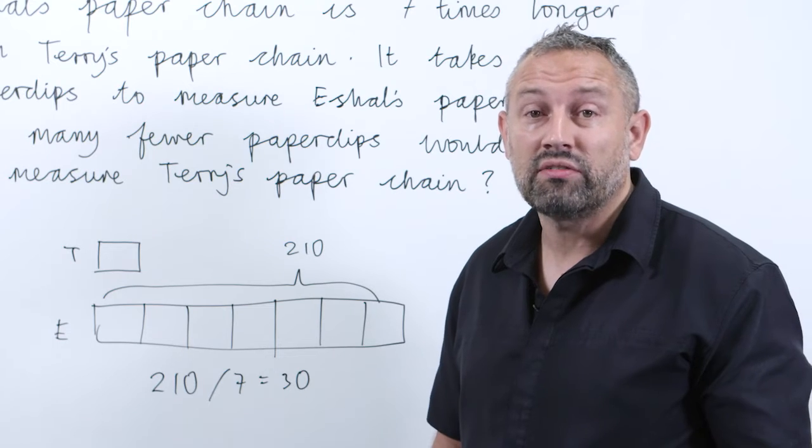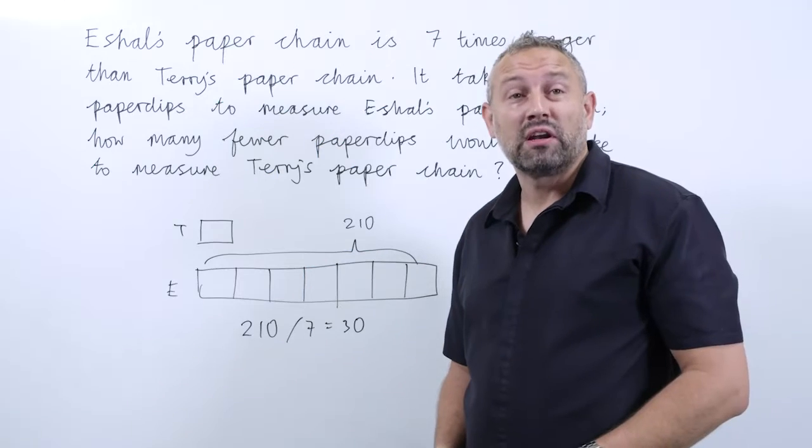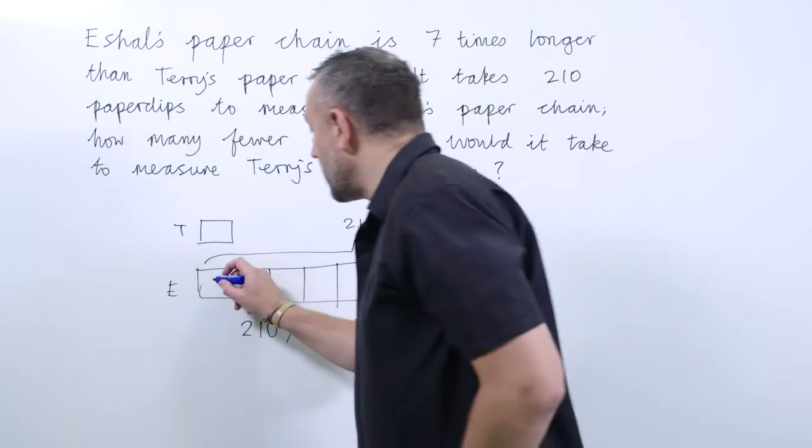They could look at it as 21 divided by 7, and they can use their place value understanding to help with that. So we then label each one.